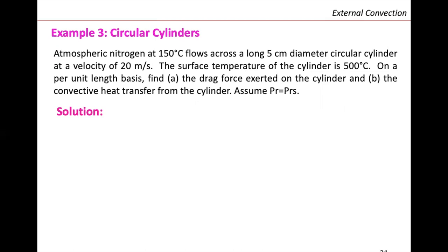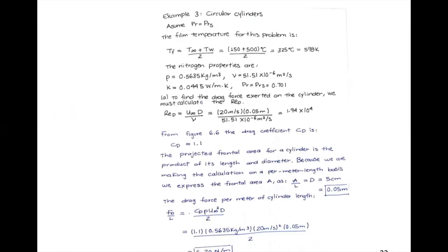Properties of nitrogen at 325°C film temperature: density, kinematic viscosity, thermal conductivity, and Prandtl number — where Prandtl equals the wall Prandtl. To find the drag force, we calculate the Reynolds number, because we are going to use figure 6.6 to read the drag coefficient.